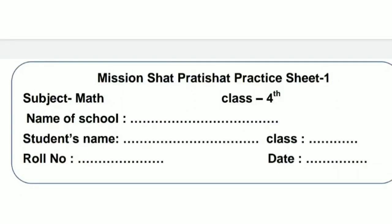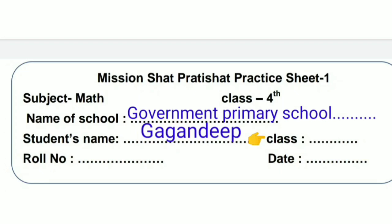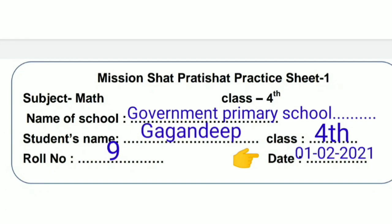First of all, we will fill in the information given here. You will write the full name of your school, for example Government Primary School. Next, write your Student's Name — I am writing Gagandeep here. Next is Class — write 4th. Next is Roll Number — write the roll number allotted by your class teacher; Gagandeep's roll number is 9. Next is Date — write today's date, which is 1 February 2021.